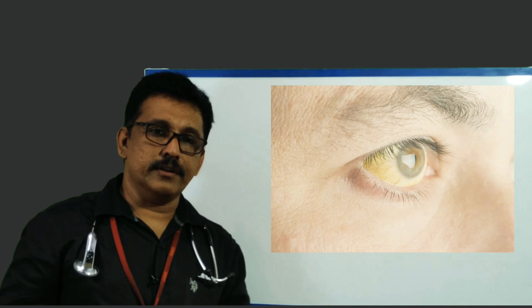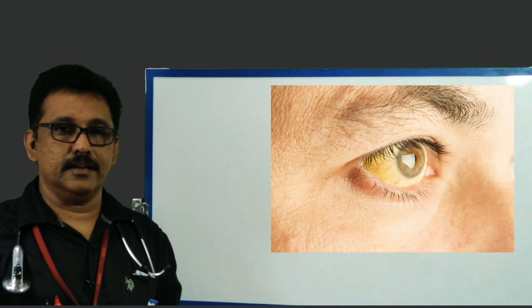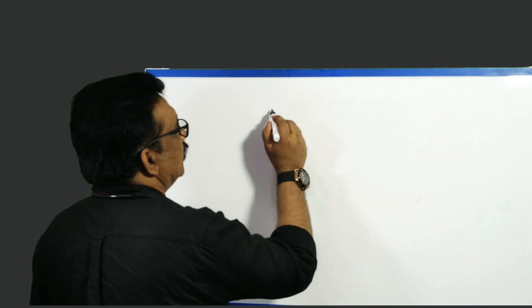Welcome to ATCM, the emergency medicine channel. Today we are going to discuss jaundice. Jaundice means yellow discoloration — you can see it all over the body: skin is yellow, sclera is yellow. This is because of an elevation in a component called bilirubin. We'll see how bilirubin is produced, then you'll understand the etiopathology behind jaundice.